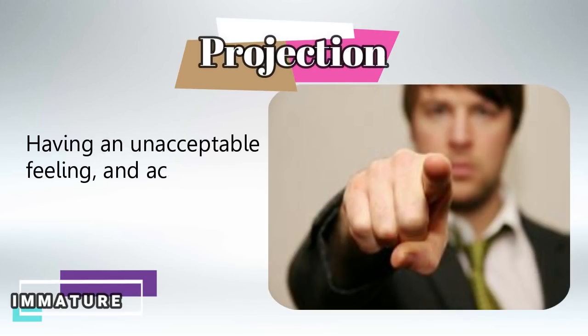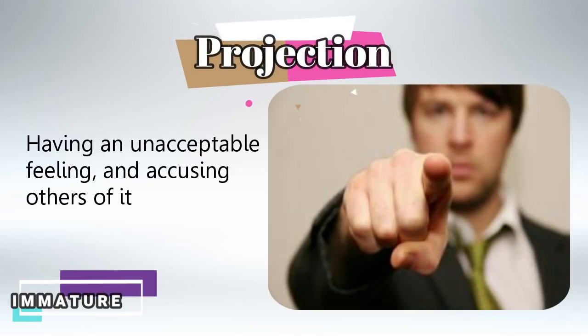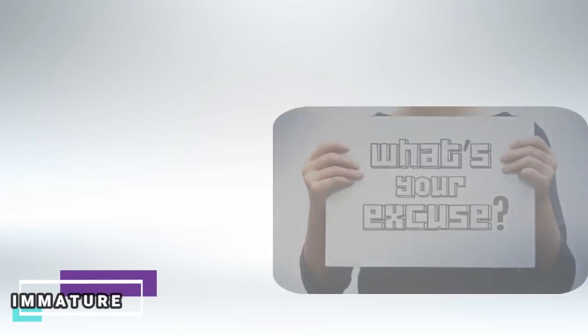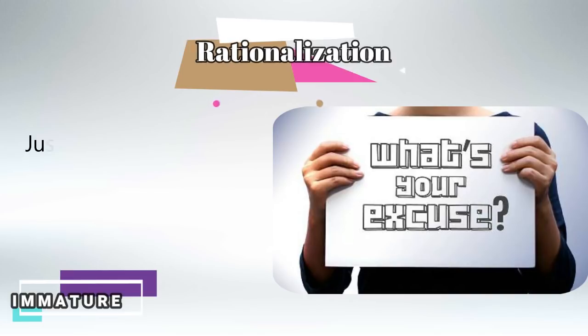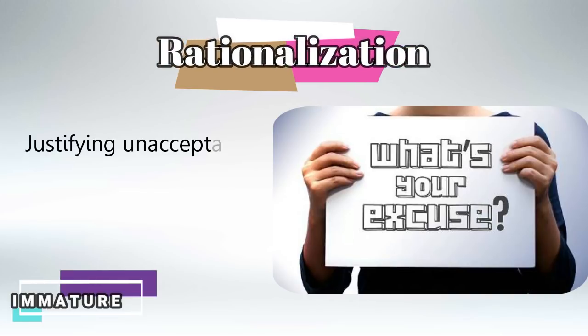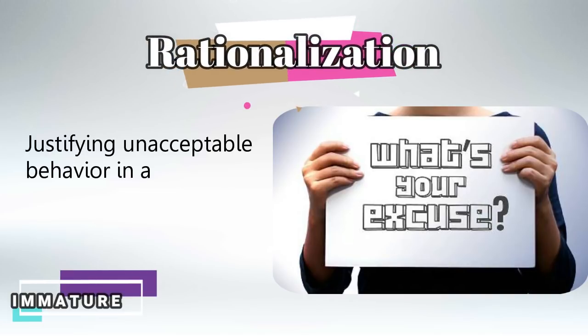In projection, one would accuse others of unwanted feelings he himself had. For example, a husband who cheats on his wife goes home and accuses his wife of cheating. Rationalization is giving excuses to get away from blame.